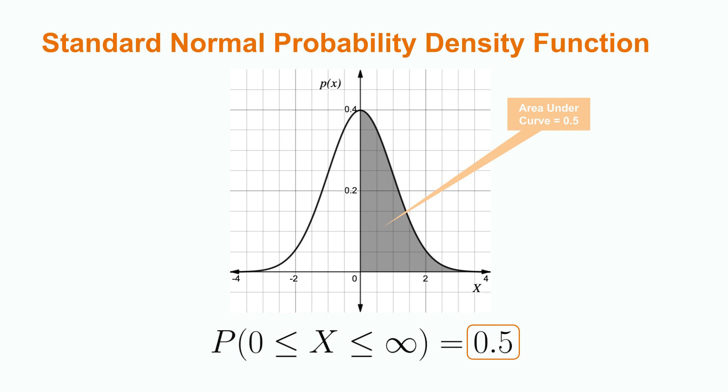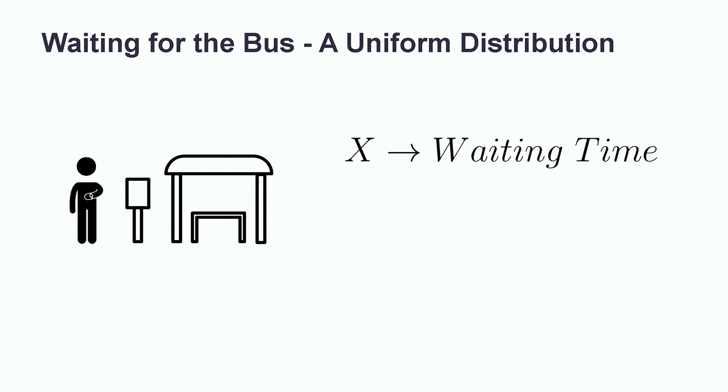Let's work on a simpler distribution that won't require any of these tools. To do this, we are going to describe our bus station situation as a problem associated with a uniform distribution and a random variable X for our waiting time. Let's say that our bus runs on 20 minute intervals, so if we arrive exactly when it does, our waiting time is 0 minutes, or if we arrive just as it leaves, we have a waiting time of 20 minutes, giving us values of 0 and 20 for a and b respectively. Finally, we can define our probability density function as p of x equals 1 over 20.